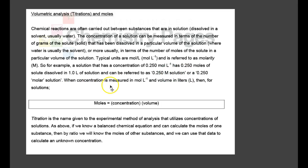When concentration is measured in moles per liter and volume in liters, then for solutions, the moles equals the concentration times the volume. Titration is the name given to the experimental method of analysis that utilizes concentrations of solutions. If we know a balanced chemical equation and can calculate the moles of one substance, then by ratio we will know the moles of another substance, and we can use that data to calculate an unknown concentration.